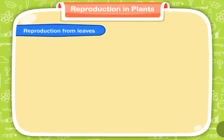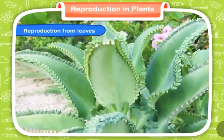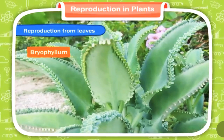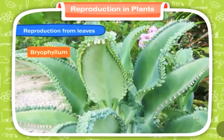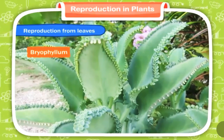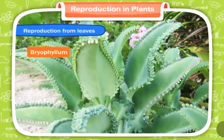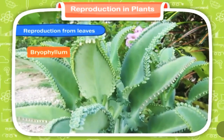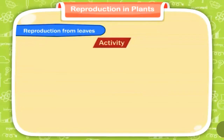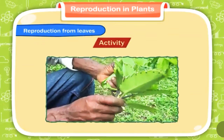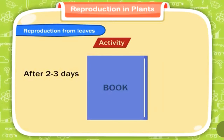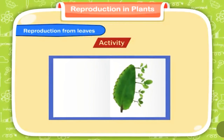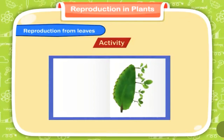Reproduction from leaves. Some plants like Bryophyllum have fleshy and thick leaves bearing buds on their edges. These buds on the edges of the leaves grow as new plants. When leaves fall down on the ground, the buds start growing. Activity: Pluck a Bryophyllum leaf and place it between the pages of a book. After two to three days, you will find several new plants growing from the buds all along the edges.